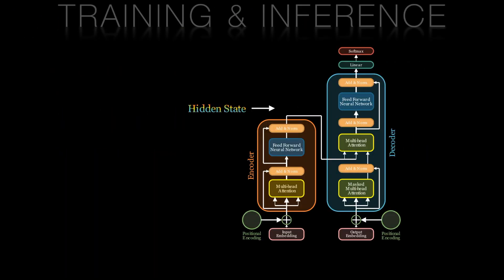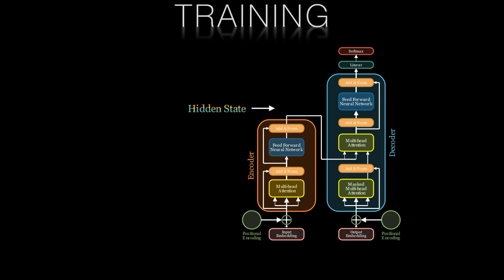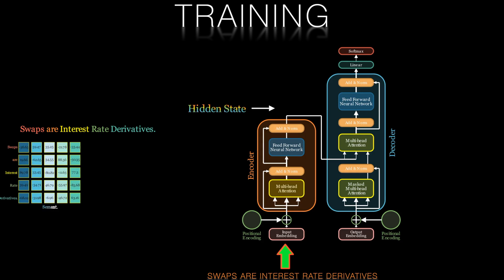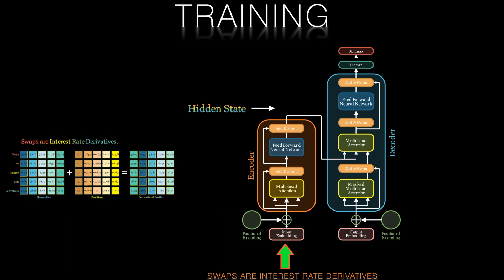So let's turn our attention to both training and inference. First, training. Training a transformer for NLP begins with converting a sequence of words into a numerical representation known as an embedding. As per previous videos, this captures the meaning and position of each word in the input sequence.